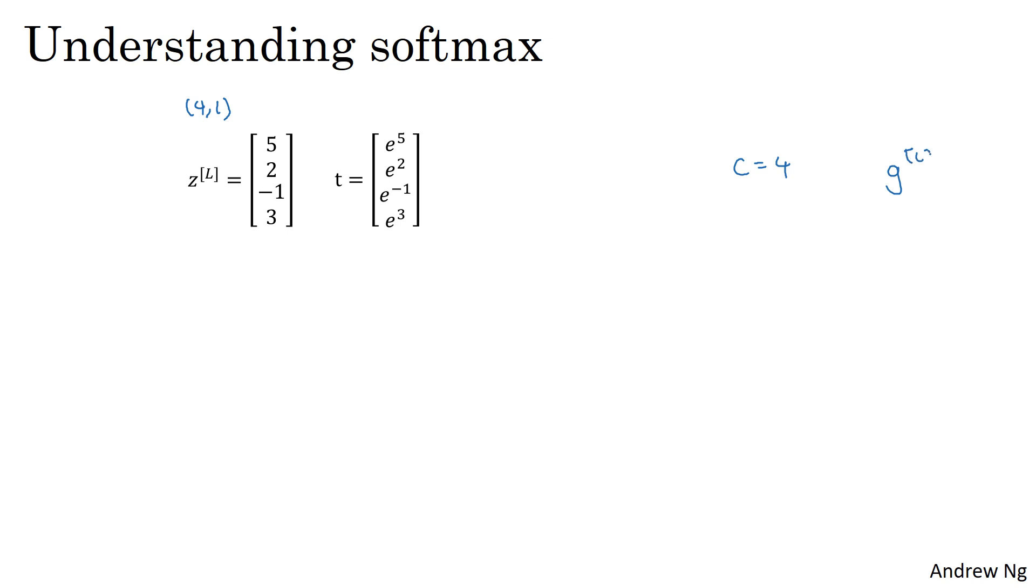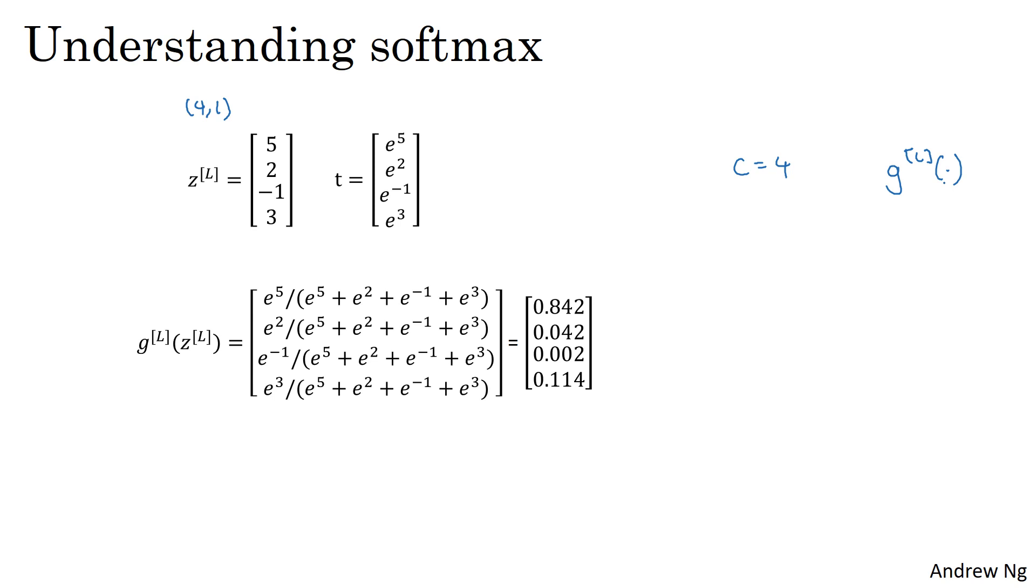And then finally, if the activation function for your output layer, G of L, is the softmax activation function, then the output will be this. It's basically taking that temporary variable T and normalizing it to sum to one. So this then becomes A of L.